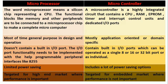Coming to power saving, microprocessors offer limited power saving, whereas microcontrollers include a lot of power saving options. Microprocessors are designed to target the high-end market where performance is important, whereas microcontrollers target the embedded market where performance is not the primary concern.